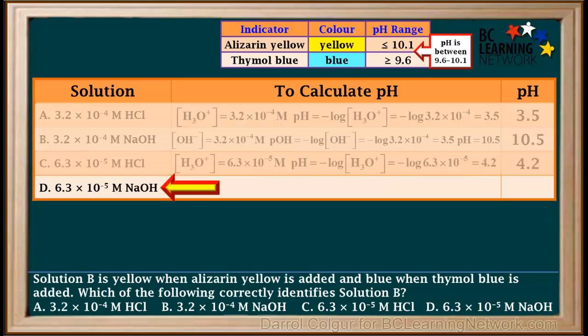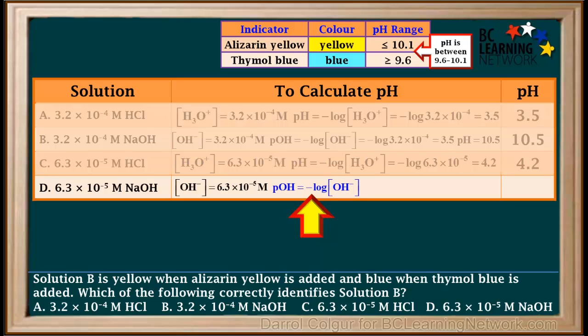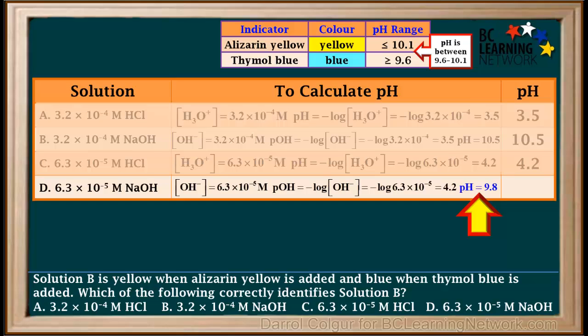Now we'll find the pH of the last solution, 6.3 times 10 to the negative fifth molar NaOH. Because this is a strong base, the hydroxide ion concentration is equal to the concentration of NaOH, which is 6.3 times 10 to the negative fifth molar. pOH is the negative log of the hydroxide ion concentration, so rounded to one decimal place the pOH comes out to 4.2. The pH is 14 minus the pOH, or 14 minus 4.2, which comes out to 9.8.